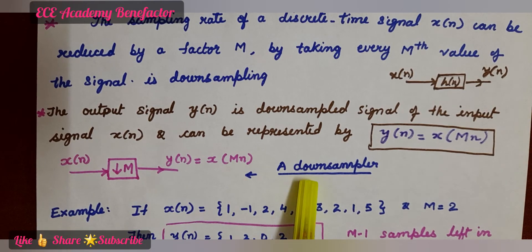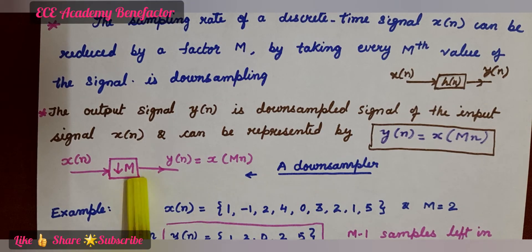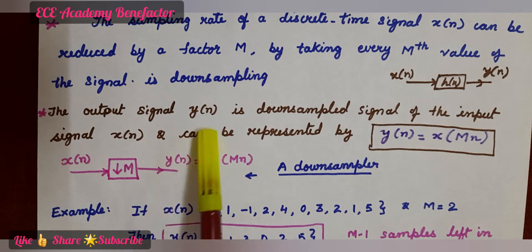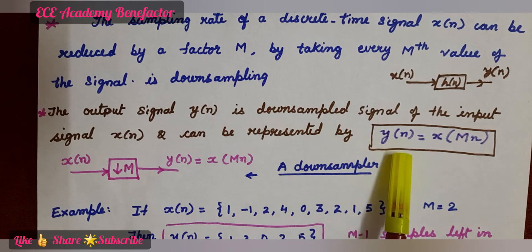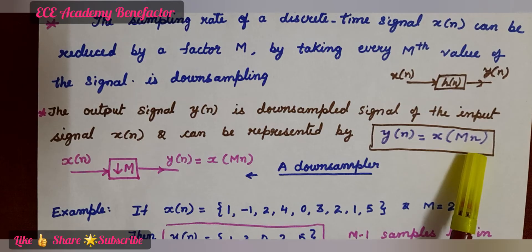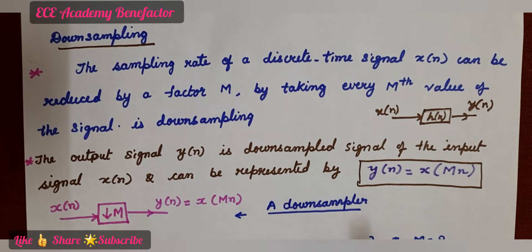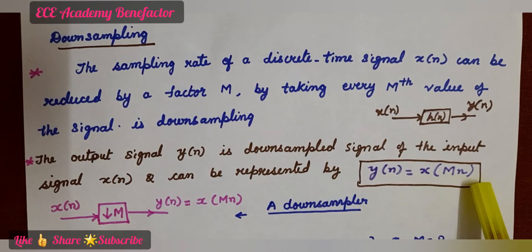What is a downsampler doing? It is reducing the sampling rate of the discrete time signal x of n by a factor capital M. Mathematically, the output signal y of n is the downsampled signal of the input signal x of n, and can be represented by y of n is equal to x of capital M dot n.